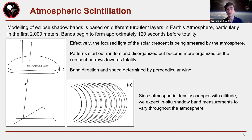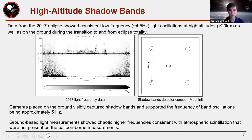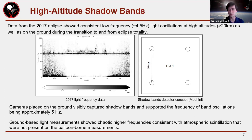This smearing is primarily due to the bottom two kilometers of Earth's atmosphere. There haven't been too many experiments with in-situ measurements of shadow band size, frequency, and direction throughout Earth's atmosphere — and high altitude balloons are a great platform for that. Studies from the 2017 eclipse have also shown high-altitude shadow band formation at altitudes above 20 kilometers, which is outside 90% of Earth's atmospheric density, making it interesting that shadow bands would form there.